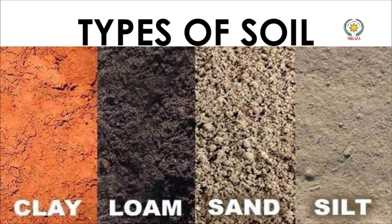Different plants need different types of soil. Rice needs clay soil, whereas wheat grows well in sandy and irrigated soil. Sorghum and millet grow in sandy soil. Coconut grows in sandy soil near the coast, and cotton needs black soil.